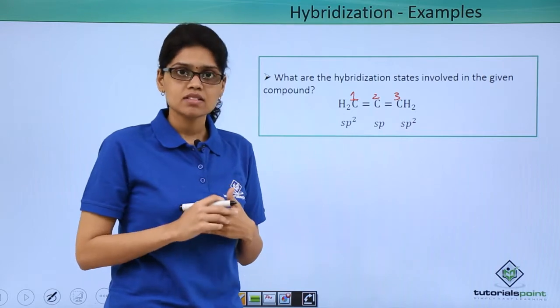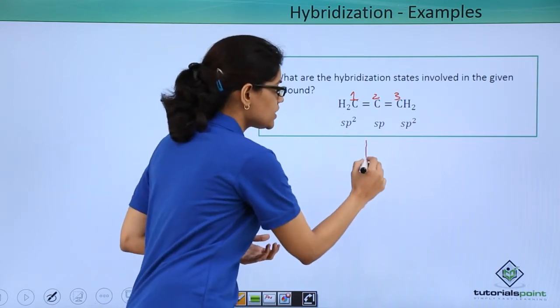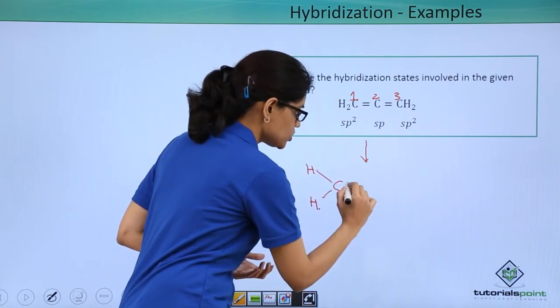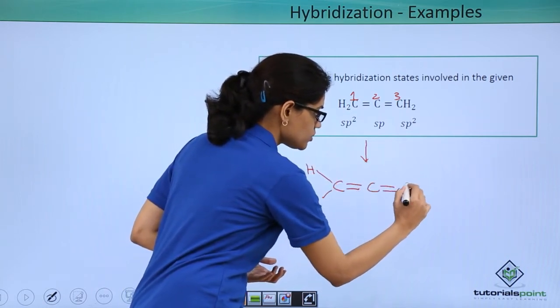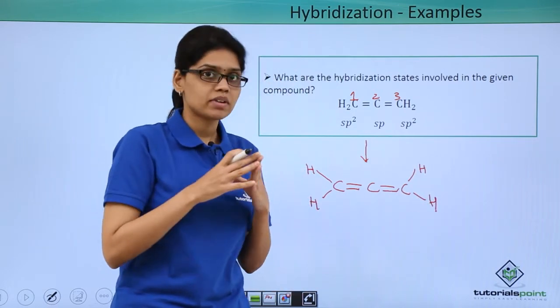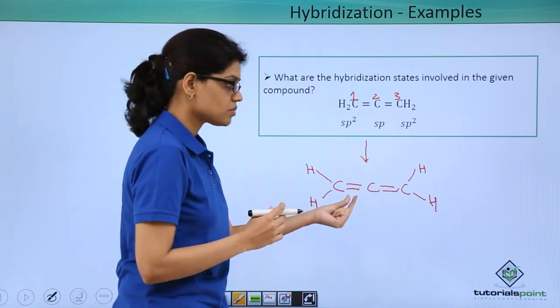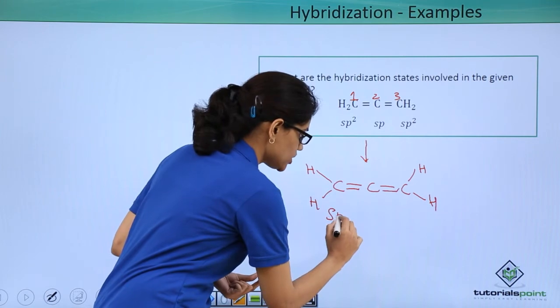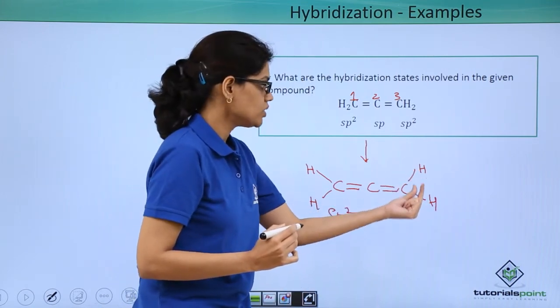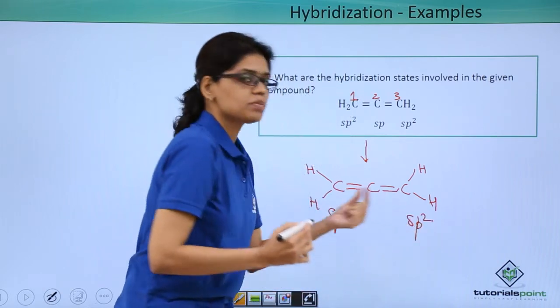We can also find the hybridization state by seeing the number of sigma bonds. Now if I elaborate this we can elaborate it as CH2 double bond C double bond CH2. Now we know that in sp2 hybridization we have 3 sigma bonds and here we have similarly 3 sigma bonds. So we have sp2 and same applies to the C3 carbon as well because 1, 2 and 3 sigma bonds you have here sp2 hybridization.